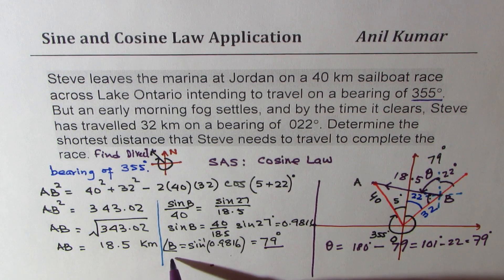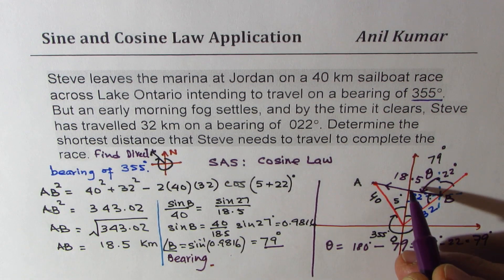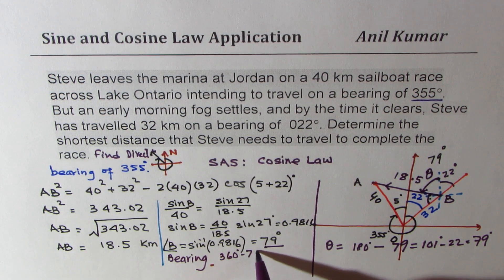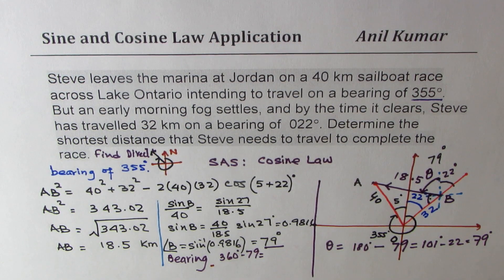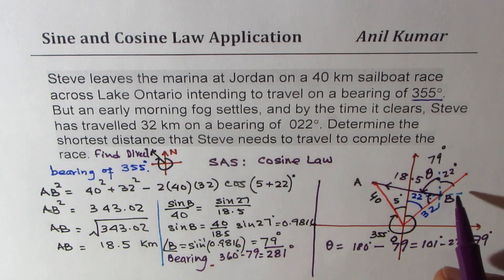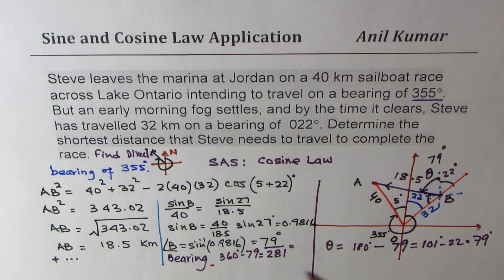So we write from north — the bearing. We have to check the angle in that direction: 360 degrees minus 79. That part is a bit tricky. 360 minus 79 gives you 281 degrees. At a bearing of 281 degrees, Steve now has to travel to reach point A. So sometimes you will be asked for the bearing also, and we just added this portion. I hope you understand and appreciate how we found the bearing angle, which is a critical part of this question.